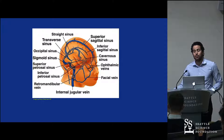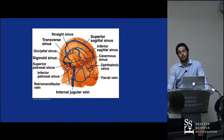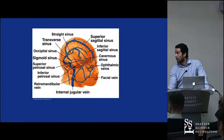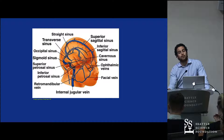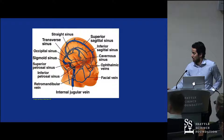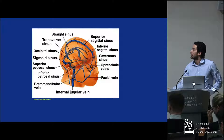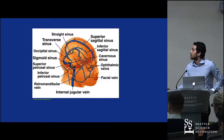Right beneath the superior sagittal sinus, running under the free aspect of the falx, we have the inferior sagittal sinus. It runs across the superior border of the corpus callosum and connects with the vein of Galen to form the straight sinus, which drains mostly into the right transverse sinus. Here you can see the superior sagittal sinus running along the mid-sagittal line from the crista galli towards the confluence of the sinuses.